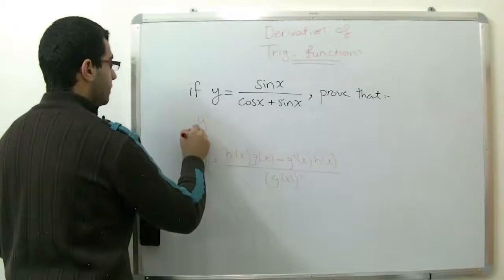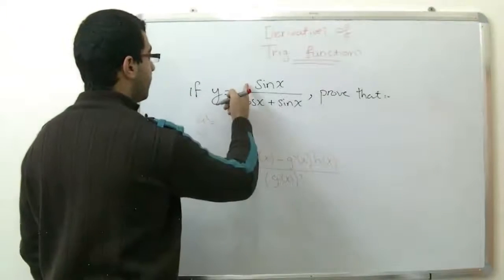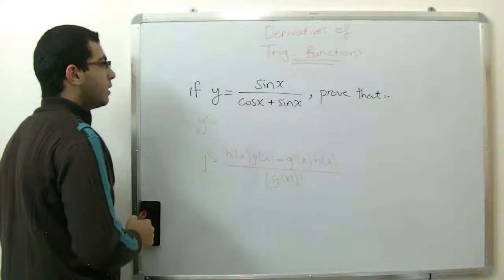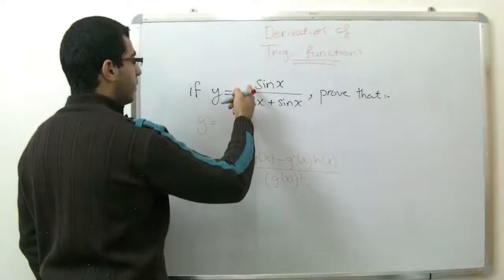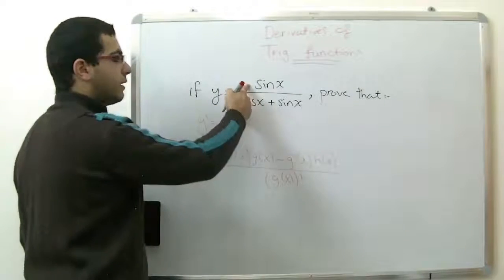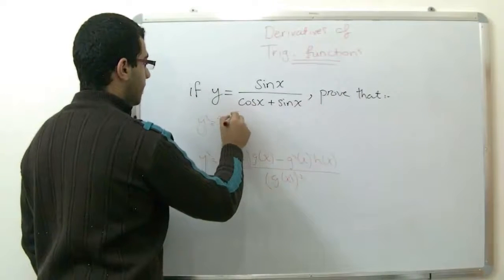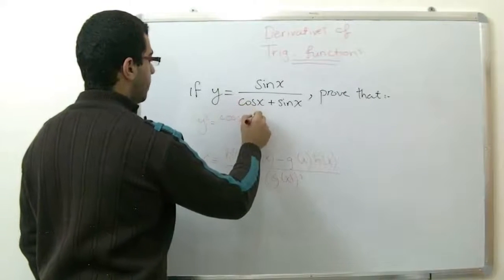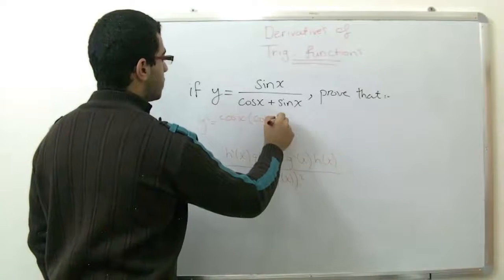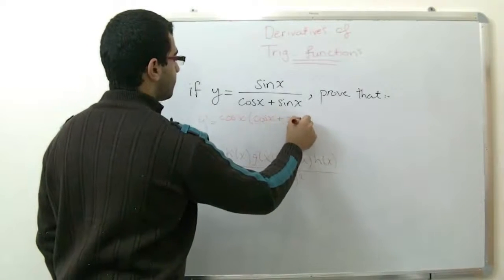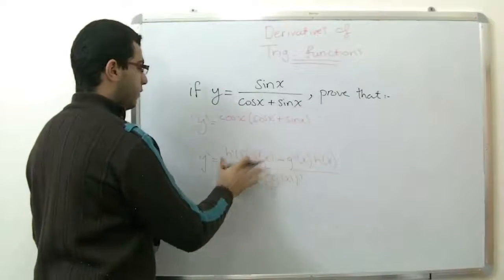So y dash equals the derivative of the numerator. As we have said before in the last video, the derivative of sine x is cosine x, multiplied by the denominator cosine x plus sine x. So this is our first part.